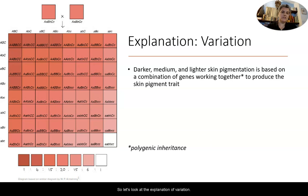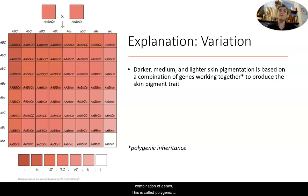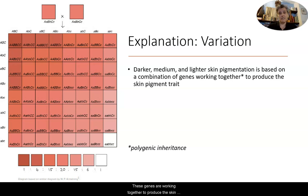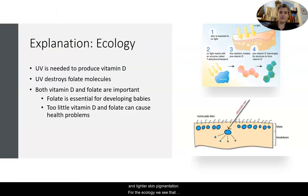Looking at the explanation of variation: darker, medium, and lighter skin pigmentation are based on a combination of genes — this is called polygenic inheritance, with 'poly' meaning many. These genes work together to produce skin pigmentation, so the variation includes darker pigmentation, medium pigmentation, and lighter skin pigmentation.